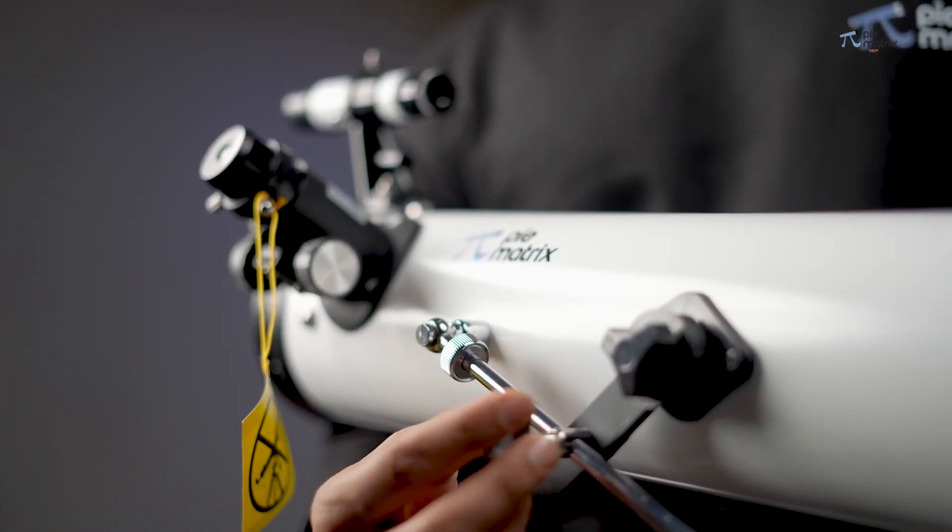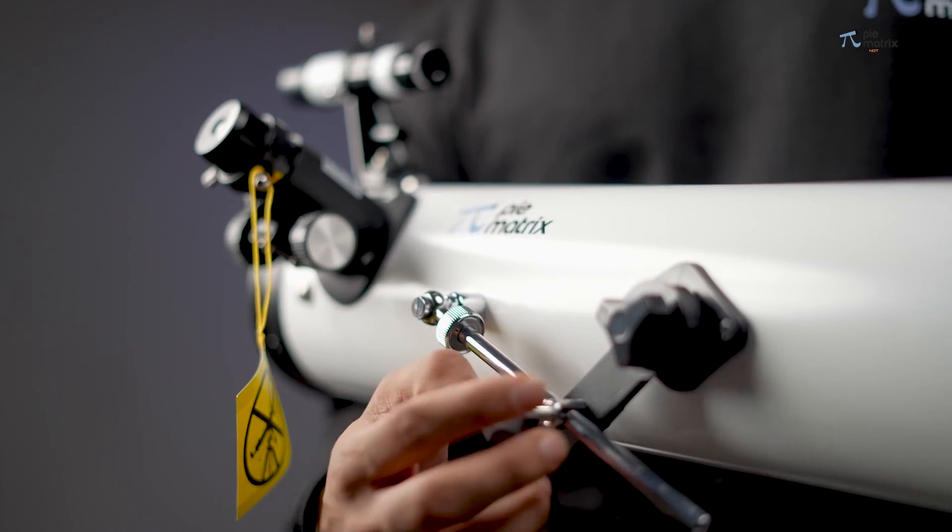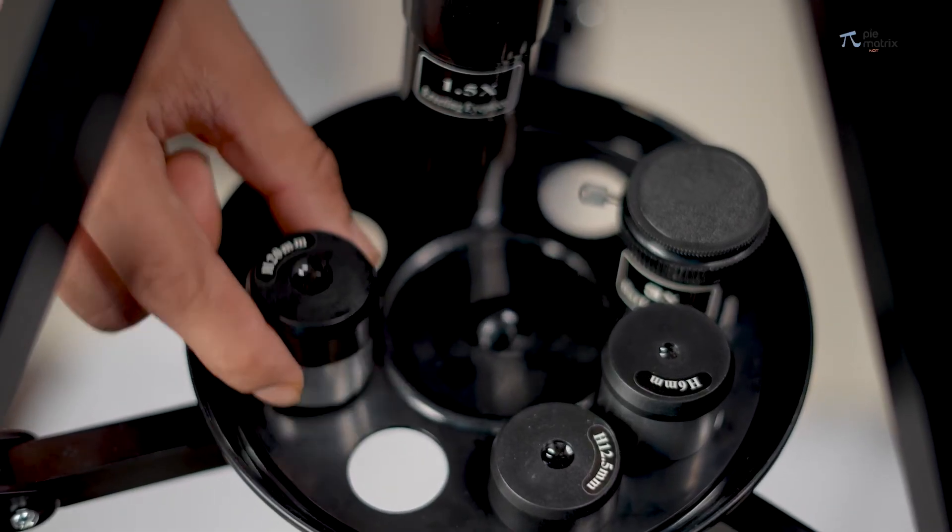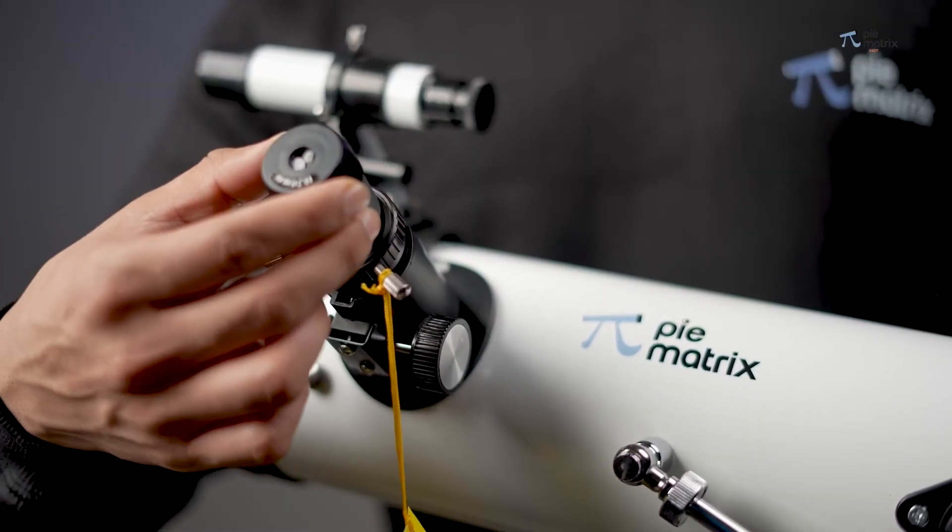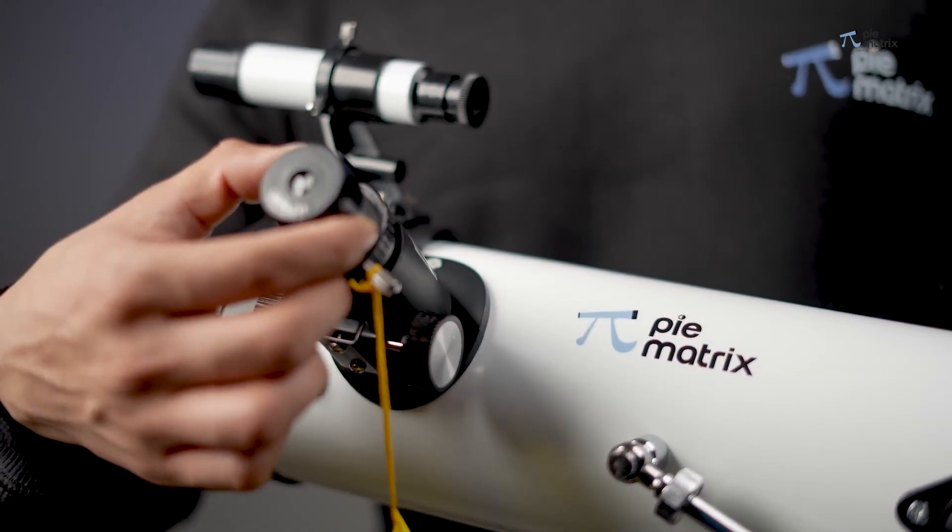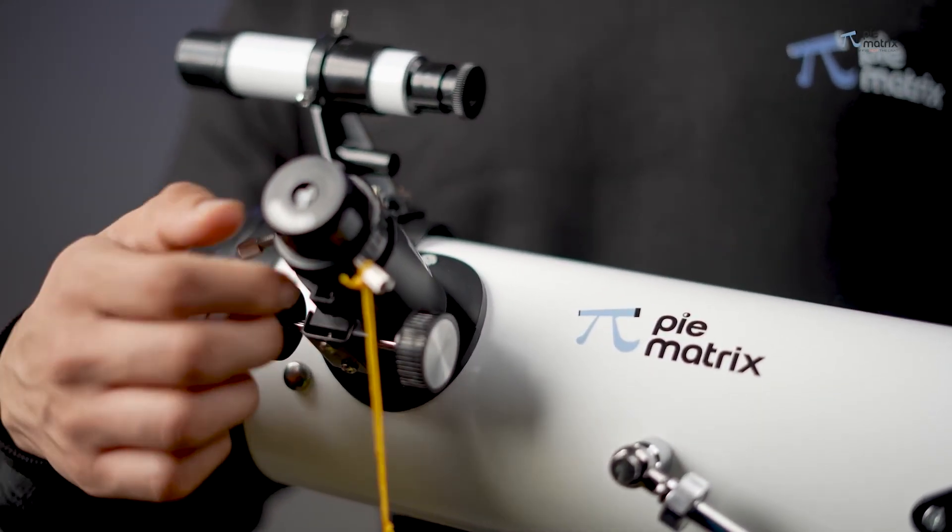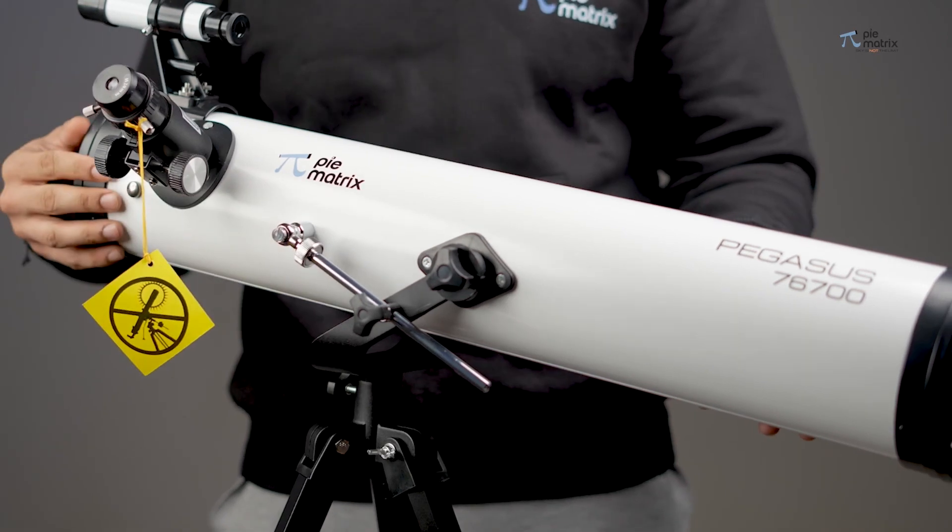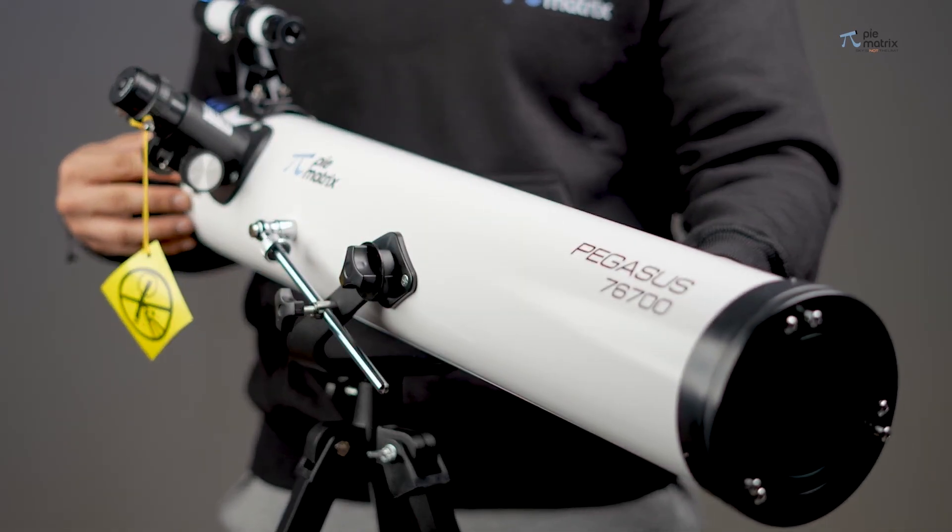Once the tube is connected to the mount and tripod, pick any of the eyepieces, insert it into the barrel of star diagonal and start enjoying the wonderful sky.